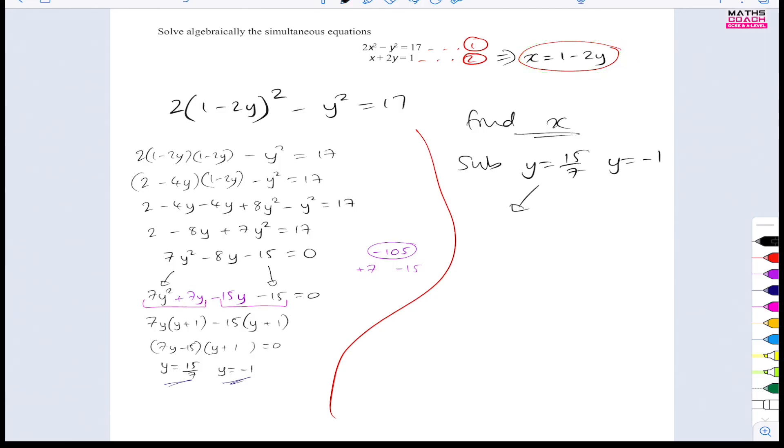So if I do this one now, so x would be equal to, I'm going to sub y in this. It's going to be 1 minus 2 bracket 15 over 7. And that gives me 1 minus, so the 2 times the 15 is 30. So 30 over 7. Now, let's assume that you can't use a calculator. So I'm going to make that 1 into a fraction. So it's going to become 7 over 7.